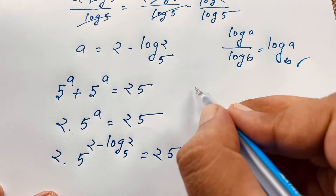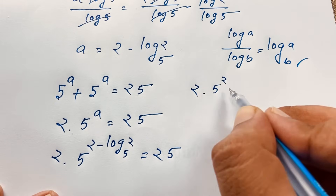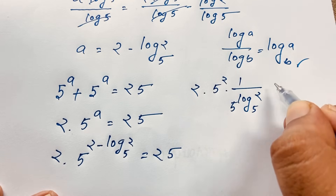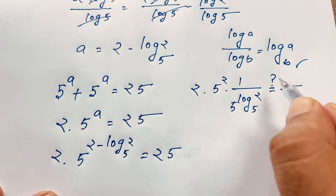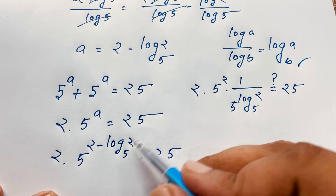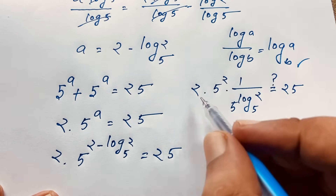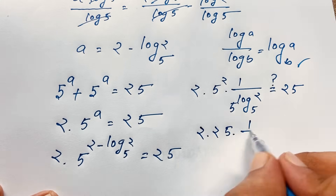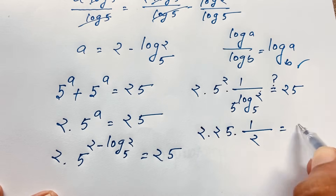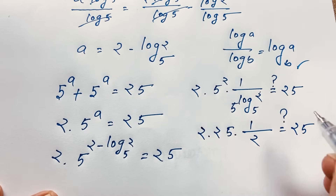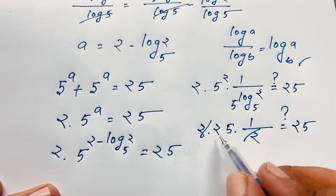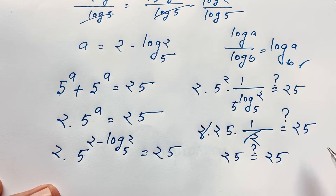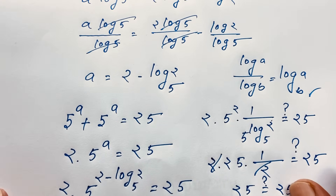Evaluating: 2 times 5 squared times 1 over 5 to the power (log base 5 of 2). Since 5 to the power (log base 5 of 2) is 2, this becomes 2 times 25 times 1 over 2, and the 2s cancel out, giving 25 equals 25. Left hand side equals right hand side, so the answer is verified.